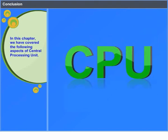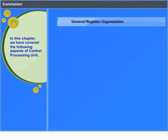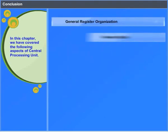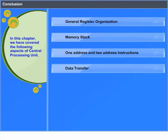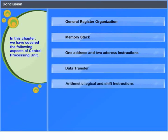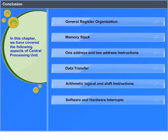Conclusion: In this chapter, we have covered the following aspects of the Central Processing Unit: General Register Organization, Memory Stack, One Address and Two Address Instructions, Data Transfer, Arithmetic Logical and Shift Instructions, and Software and Hardware Interrupts, as well as Arithmetic and Instruction Pipelines.